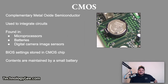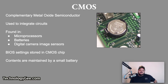Next we're going to talk about the CMOS. CMOS stands for Complementary Metal Oxide Semiconductor. It is a technology used to produce integrated circuits. CMOS circuits are found in several types of electronic components including microprocessors, batteries, and digital camera image sensors. The specific settings used by the BIOS are stored in the CMOS chip, whose contents are maintained by a small battery on the motherboard.